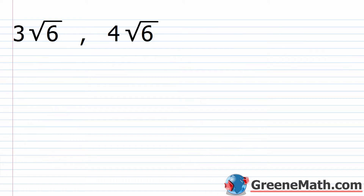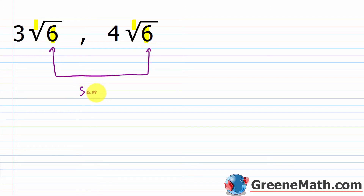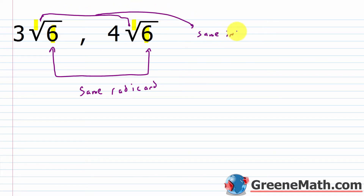To have like radicals, we have to have the same index and the same radicand. In this first example, the index is 2 and 2 — if you don't see anything, it's understood to be a 2 because we recognize this as a square root. Then looking at the radicand: in this case it's a 6, and in this case it's a 6. So we have the same radicand and the same index. These would be like radicals.